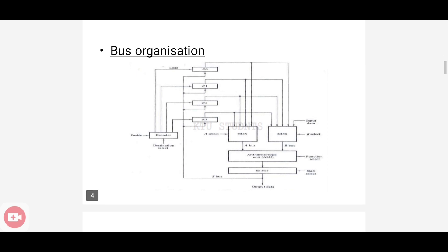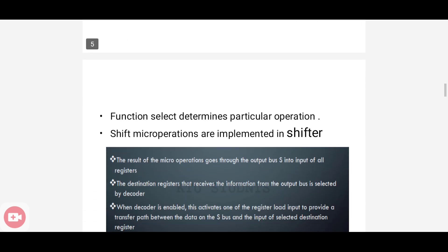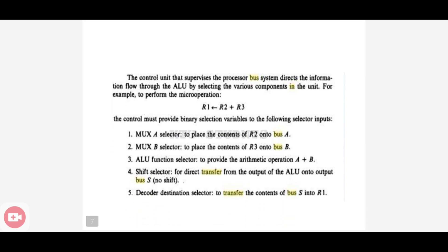This is the explanation of bus organization architecture. Now let's see how to implement an addition operation: R1 = R2 + R3 using this bus organization. We have three registers — two source registers and one destination register. R2 and R3 are source registers and R1 is the destination register. This is how it is implemented using bus organization.